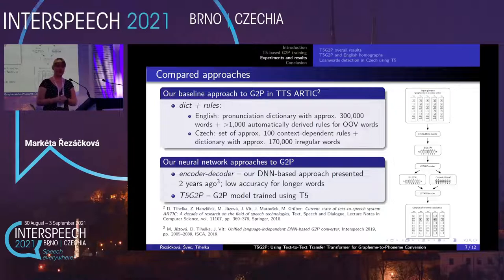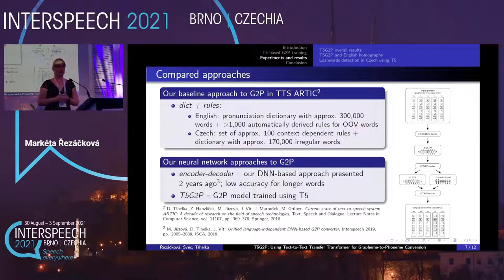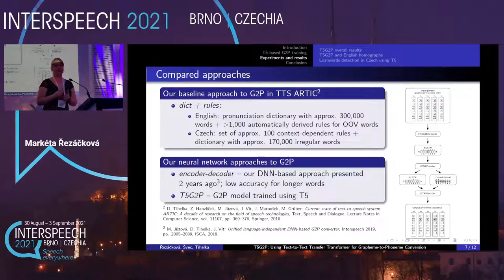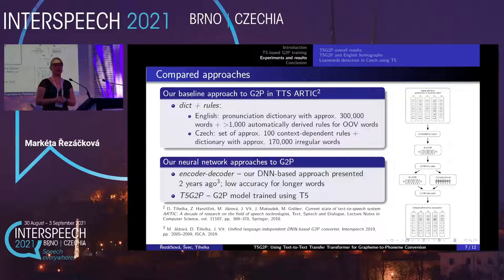Before showing the results, I would like to briefly describe the other approaches in our TTS system presented in the results table. Our TTS system, Arctic, has been developed at our department for almost three decades. As a baseline for G2P, it uses a dictionary plus rule-based approach. For English, we have a pronunciation dictionary with approximately 300,000 words and automatically derived rules for out-of-vocabulary words. For Czech, we have approximately 100 context-dependent rules designed by phonetic experts and a dictionary with approximately 170,000 irregular words.